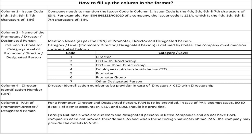Column 2 - Name of the Promoter, Director, or Designated Person. Mention the name as per the PAN — important, the name must be entered exactly as per the PAN. Column 3 - Code for Category Level of Promoter, Director, or Designated Person. You have to enter the following codes.